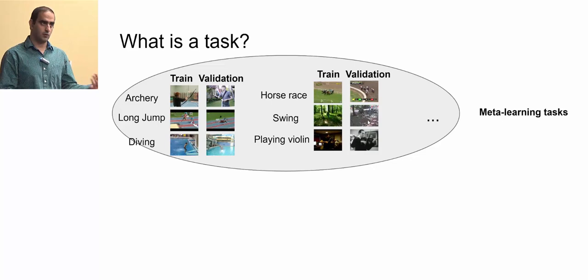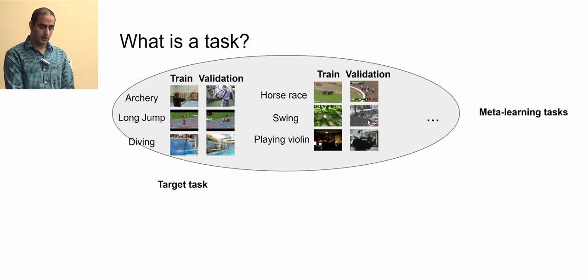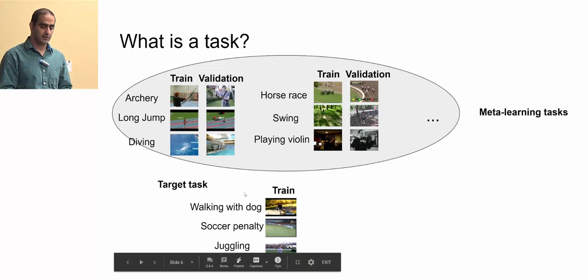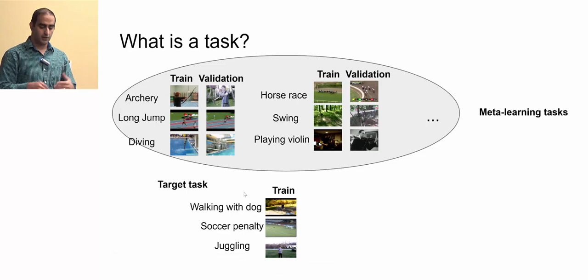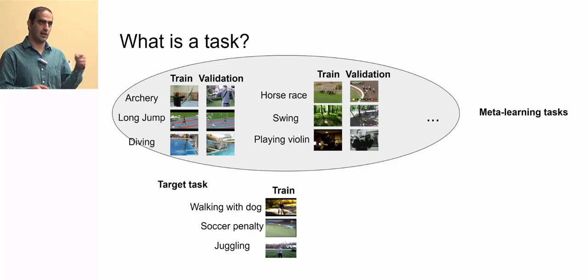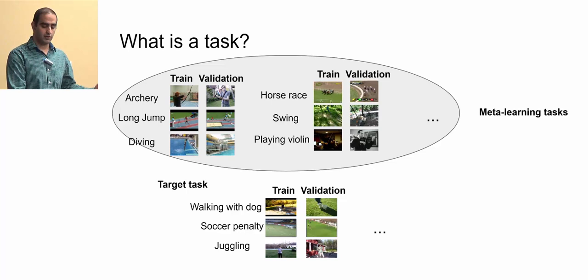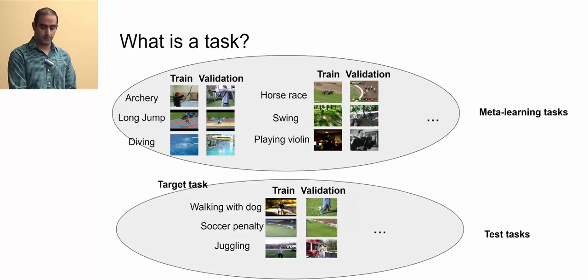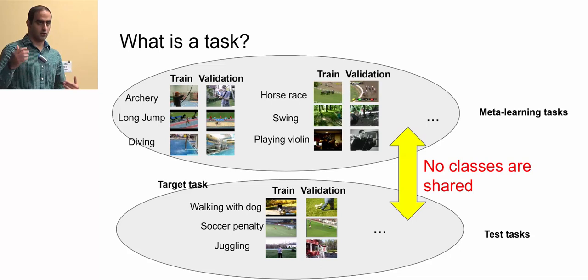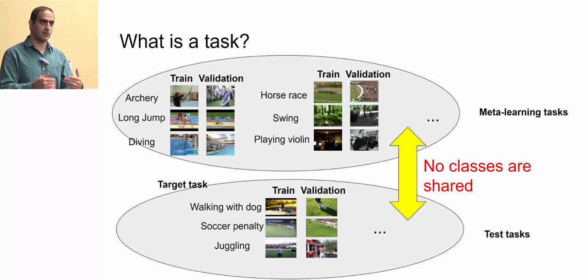After meta-learning, we have a target task — again with three different classes like walking with duck, cycle penalty, juggling — with just one training example per class. We evaluate it on the validation set. We can have many different target tasks, collected into a test task set. Importantly, the classes are not shared: you have never seen 'walking with duck' during meta-learning, so it is a completely new class you must learn.